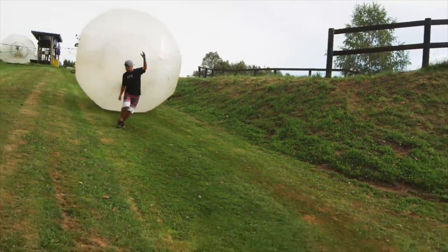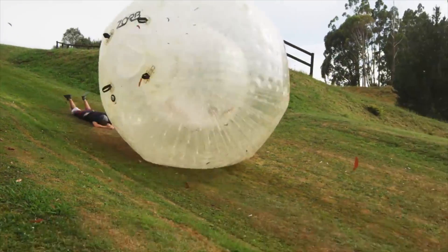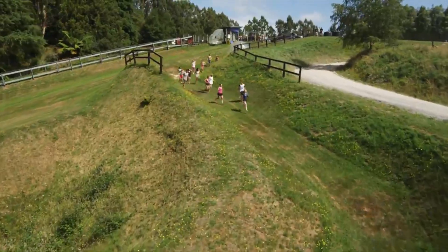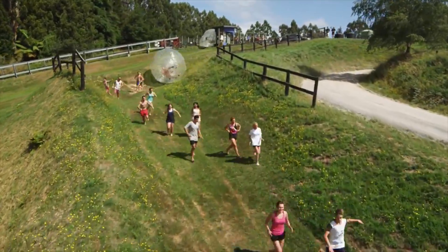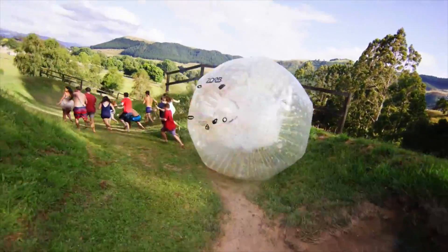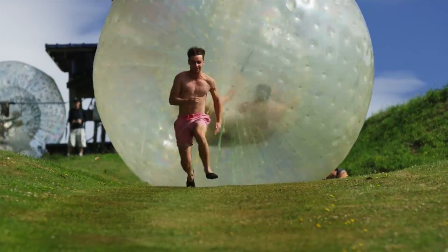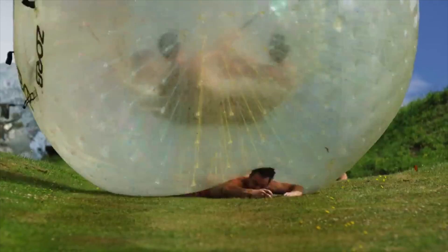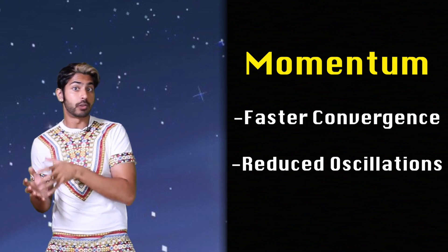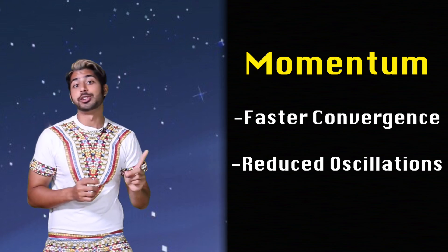Thanks, Aristotle. When a ball is pushed down a hill, it accumulates momentum, meaning it gets faster and faster. In the same way, our momentum term increases for dimensions whose gradients point in the same direction and reduces updates for dimensions whose gradients change direction. This means faster convergence and reduced oscillations.